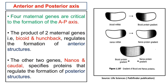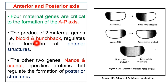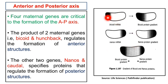The products of four maternal effect genes are critical for formation of the anterior-posterior axis. The products of two maternal genes — bicoid and hunchback — regulate the formation of anterior structures, which include the head and thorax. The other two genes — nanos and caudal — are for posterior structure formation, which includes the abdominal part.